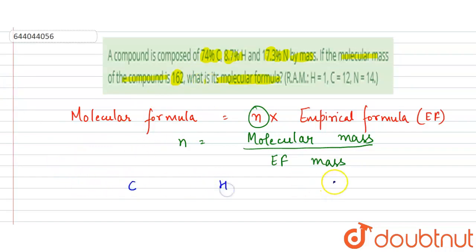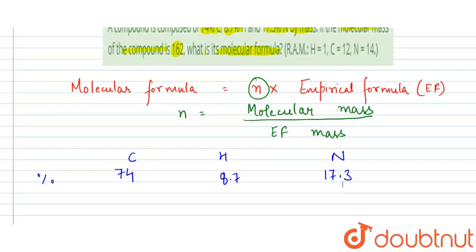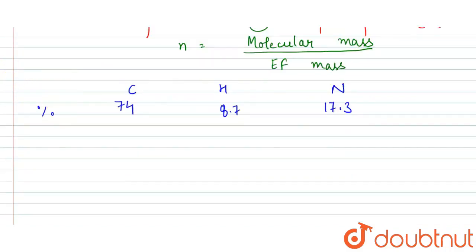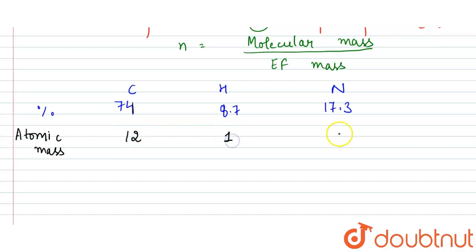In the question we have three atoms: carbon, hydrogen, and nitrogen, with percentages 74%, 8.7%, and 17.3%. If we suppose that the molar mass of the compound is 100 grams, then we have 74g of carbon, 8.7g of hydrogen, and 17.3g of nitrogen. Their atomic masses are: carbon = 12, hydrogen = 1, and nitrogen = 14.